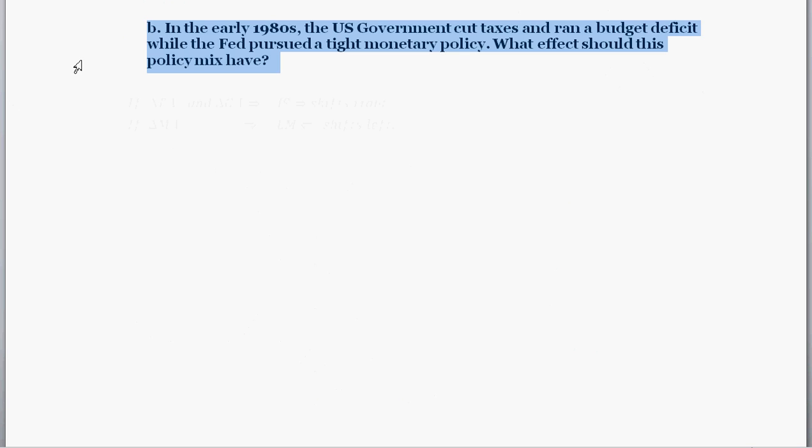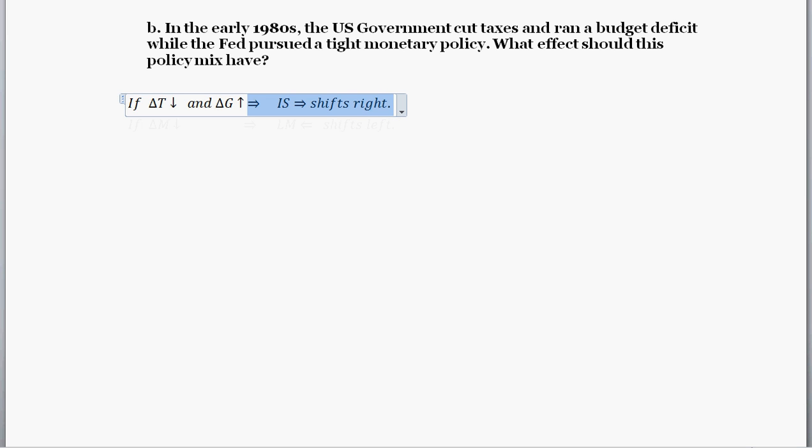Part B asks the following. In the early 1980s, the US government cut taxes and ran a budget deficit while the Fed pursued a tight monetary policy. What effect should this policy mix have? So first off, government cut taxes and increased government spending. So what implication does that have? We found previously when we dealt with the IS curve, a decrease in taxes or an increase in government spending or some combination of the two is going to shift the IS curve outward.